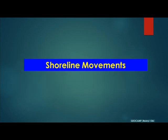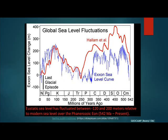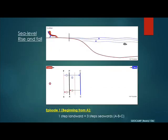Now let's look at shoreline movements. This is a global sea level curve, showing sea level changes for the last approximately 500 million years. It tells us that sea level has fluctuated between 120 and 200 meters relative to the current-day sea level. Let's do a brief exercise on how sea level actually rises and falls — supposing we have an observer sitting at the beach and observing shoreline positions through time.